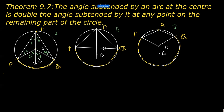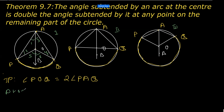What we need to prove here is the proof part. We have to prove that angle POQ — that is, the angle subtended by an arc at the center — will be twice the angle subtended by it on the remaining part of the circle, that is angle PAQ. Now I'll start the proof. First of all, I'm going to use the isosceles property in triangle AOP.